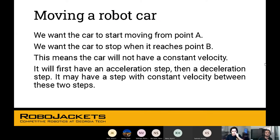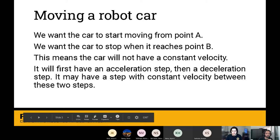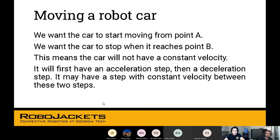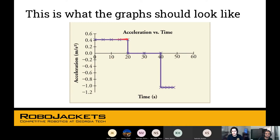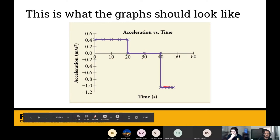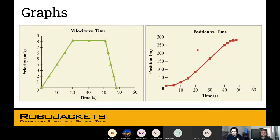We want the car to start moving from point A. We want it to stop when it reaches point B. This means the car will not have a constant velocity. It should first have an acceleration step, then a deceleration step, and it might have a step where it's moving at constant velocity between the two steps. This is what the graphs should look like. First it has a positive acceleration, then it drops down to zero, so this is constant velocity, then it decelerates. This is acceleration versus time. You compare that to velocity, and you can see the velocity is steadily increasing, remains constant, then drops down to zero. Same is for position.